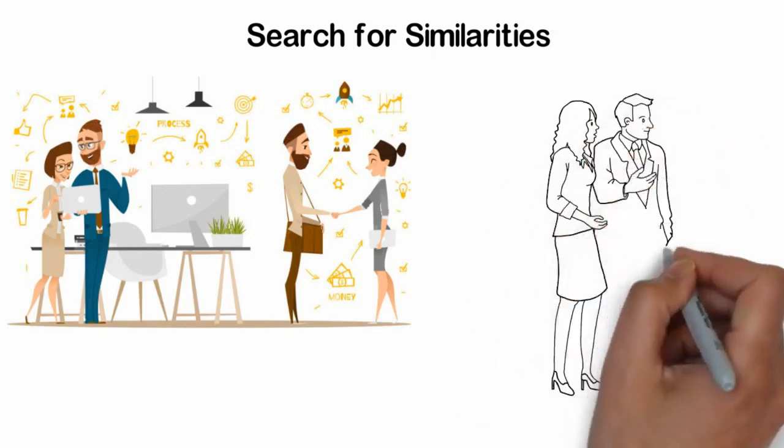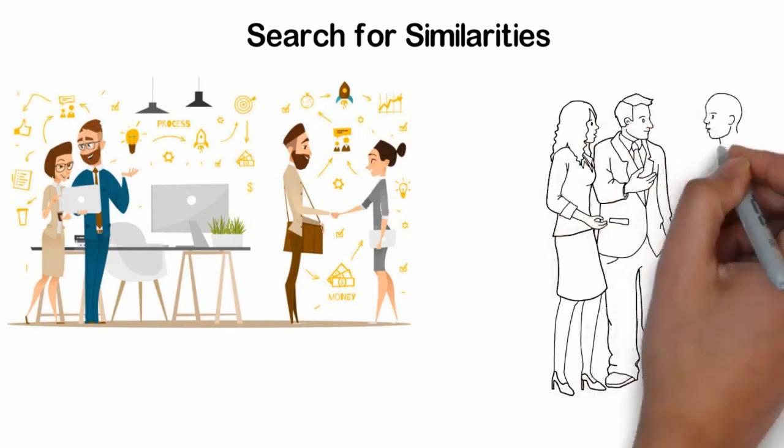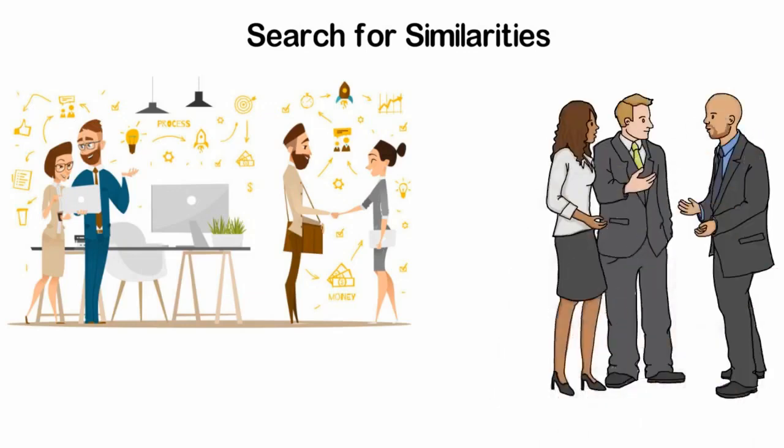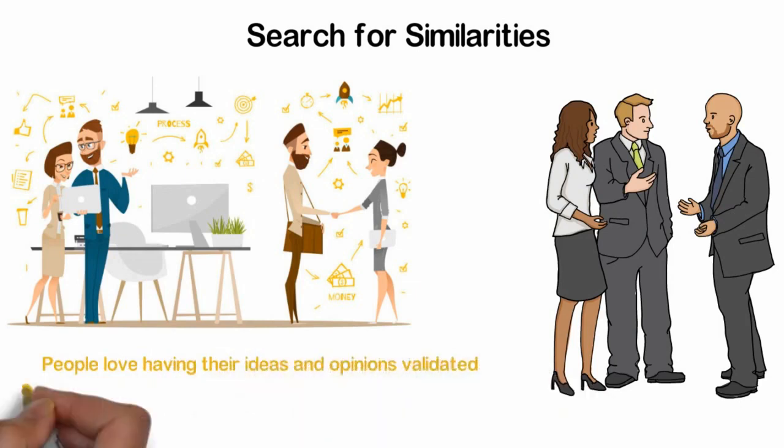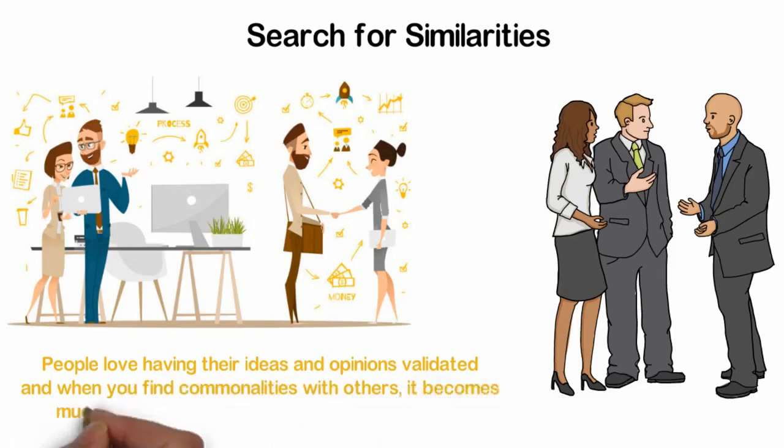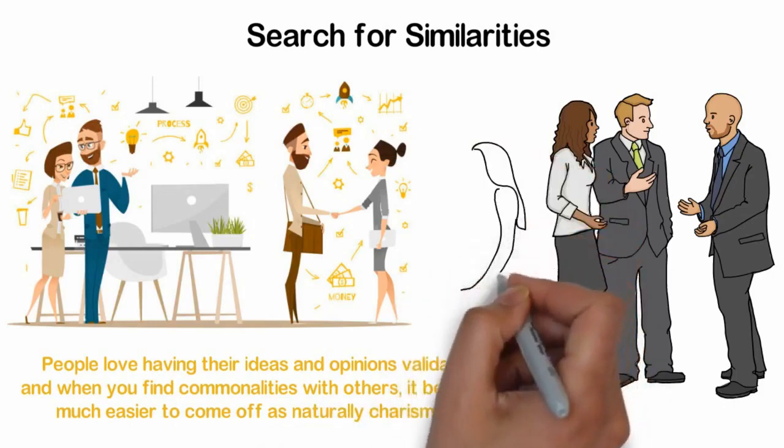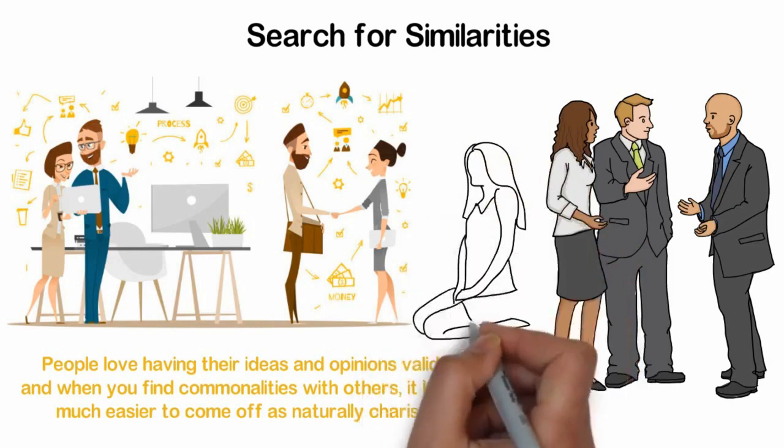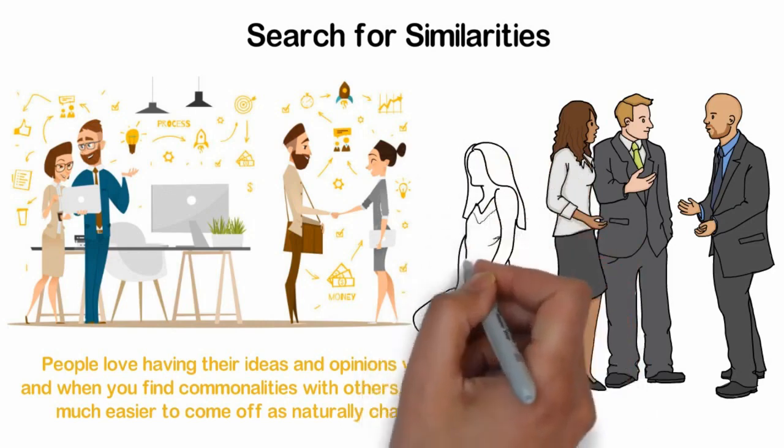When you find these areas where you share similar opinions with the other person, it shows you in a positive light and automatically makes a conversation more memorable. People love having their ideas and opinions validated. When you find commonalities with others, it becomes much easier to come off as naturally charismatic. This does not mean that you have to be disingenuous or pretend to agree with someone when you don't. Simply steer the conversation towards the things that you may have in common and stick with them.